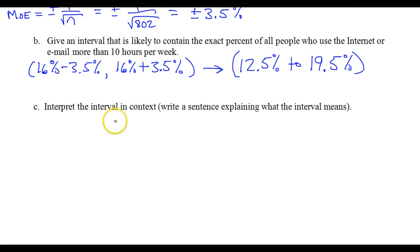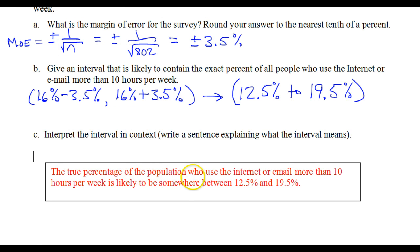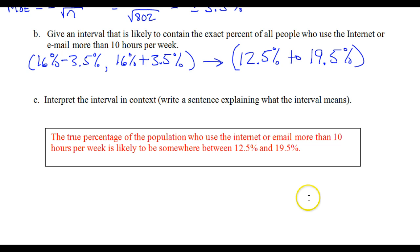Just writing this all out in words, that's what it means when it says interpret the interval in context. We're going to write a sentence. The true percentage of the population who use the internet or email more than 10 hours per week is likely to be somewhere between 12.5% and 19.5%. That's what margin of error tells you.